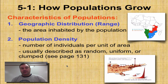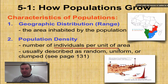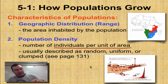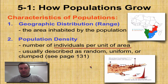The second characteristic of a population is its density. Density is defined as the number of individuals per unit area — make sure you take note of that. Density is usually described as random, uniform, or clumped. Random means they're just spread out around an area. Uniform means they're evenly spread, like one every two acres. Or they could be clumped.